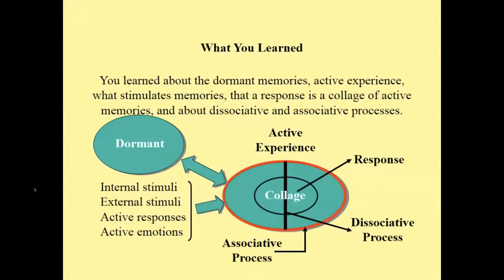This is where it gets interesting. Recall you learned about dormant memories, active experience, what stimulates memories, that a response is a collage of active memories, and about dissociative and associative processes. This figure shows the most basic parts of the personality model. Active stimuli, responses, and emotions all activate dormant memories into the active experience. A collage built on the last response — the recurrent process — creates and causes the next response. The associative process screens for fitting responses to activate in the active experience. The dissociative process associates with unuseful active memories in the conscious experience to make them unconscious.